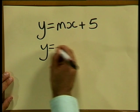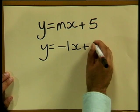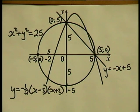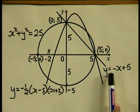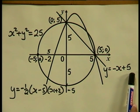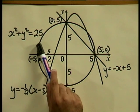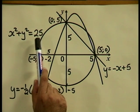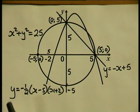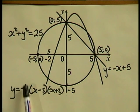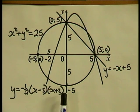We can now complete the linear formula: y equals negative x plus 5. So the formulas of the three graphs are: the straight line, y equals negative x plus 5; the circle, x squared plus y squared equals 25; and the parabola, y equals negative one half times (x minus 5)(x plus 2).